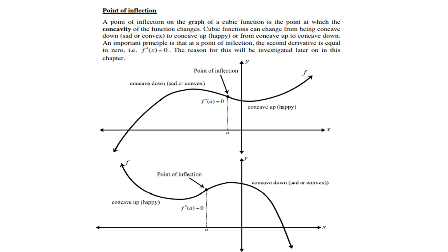Looking at the graph, you get concave down — the sad phase — and then in between the local maximum and local minimum you get your point of inflection. Similarly with the second graph, if it goes from concave up to concave down, then again between the local minimum and local maximum you will find the point of inflection.